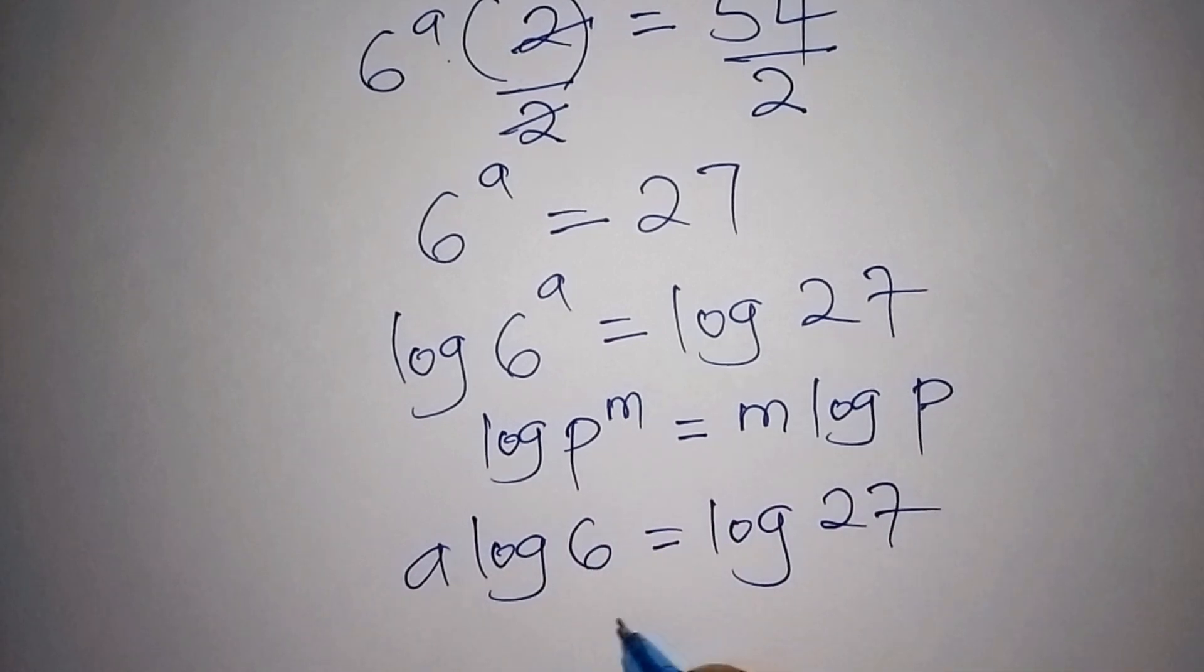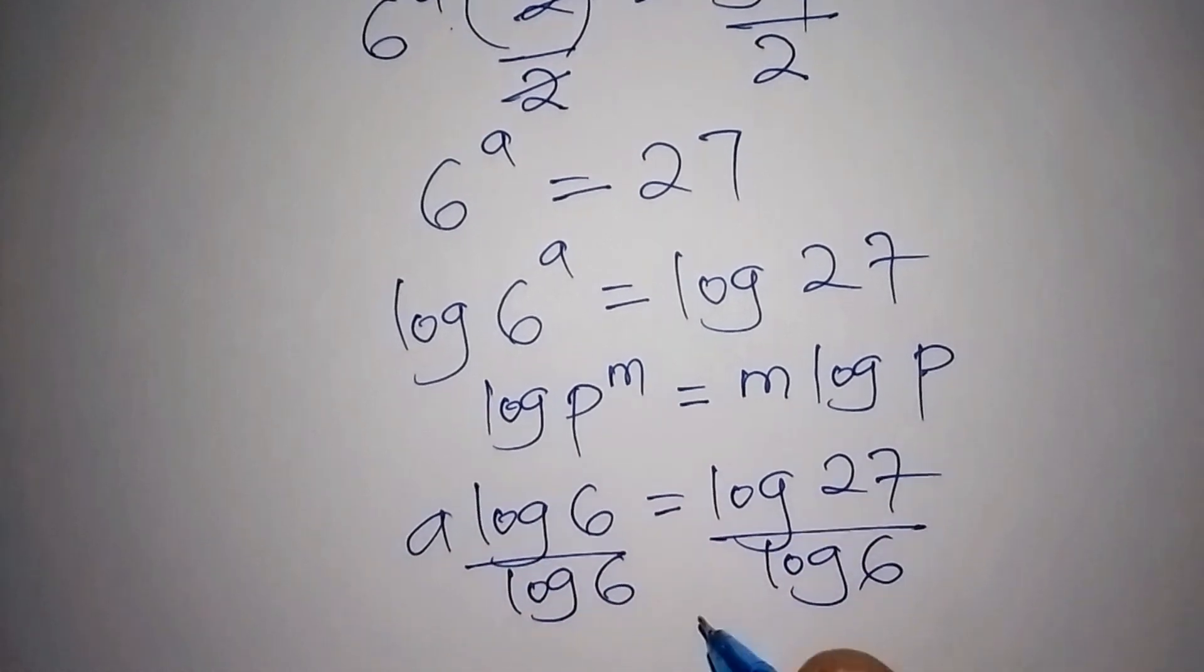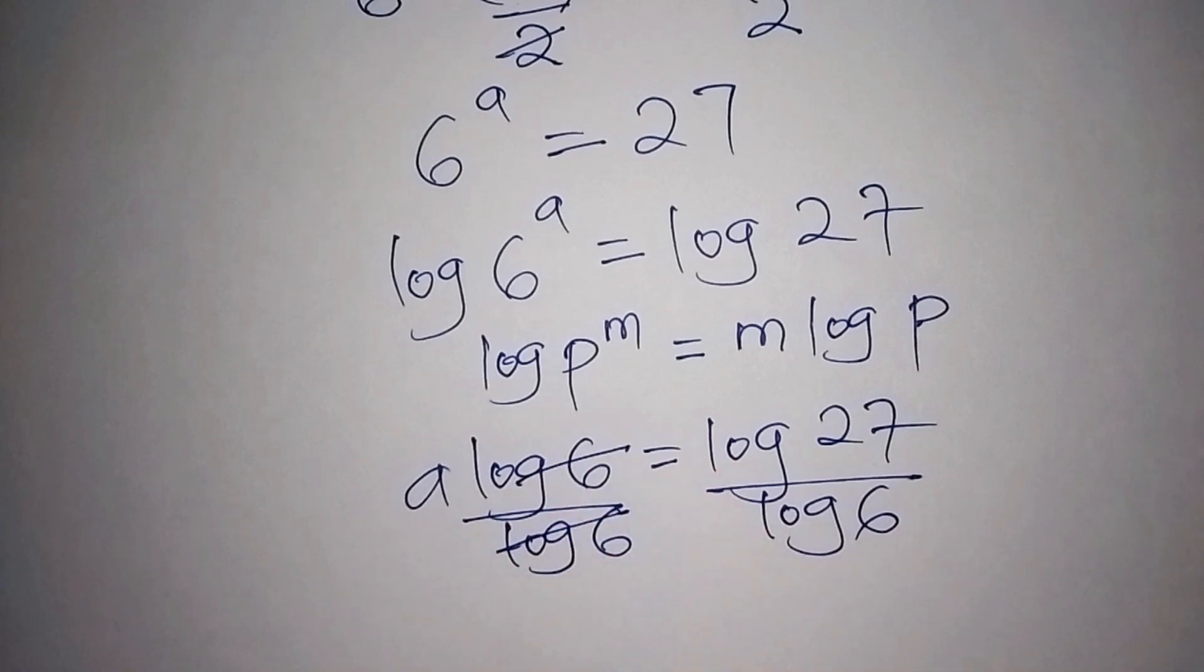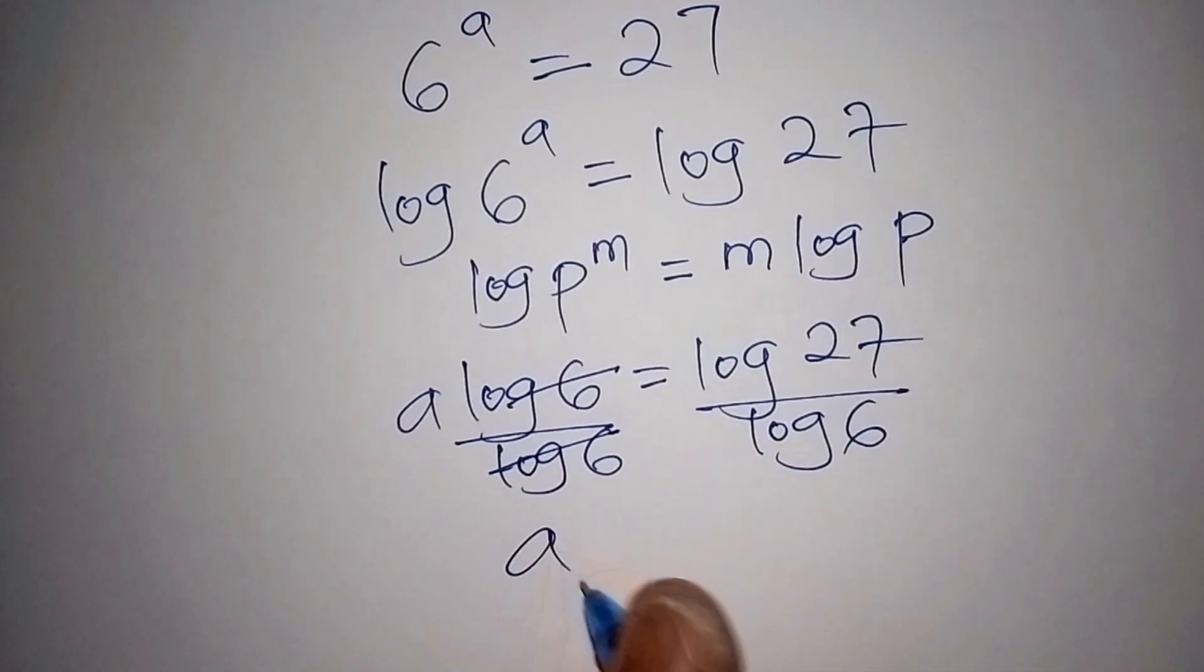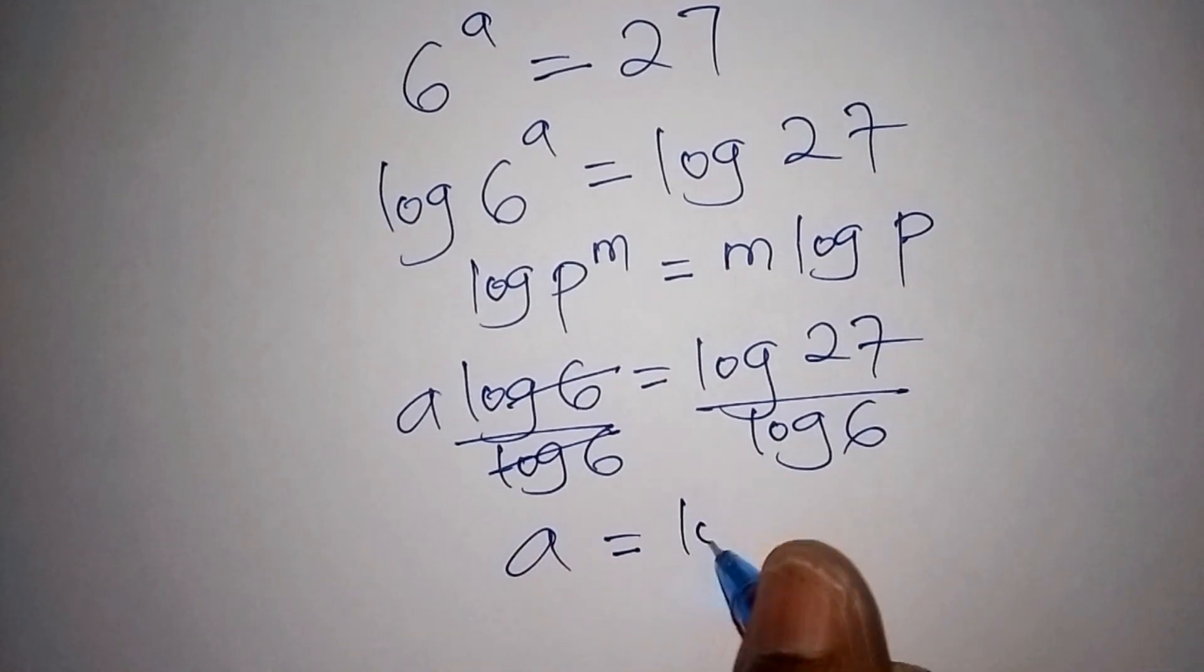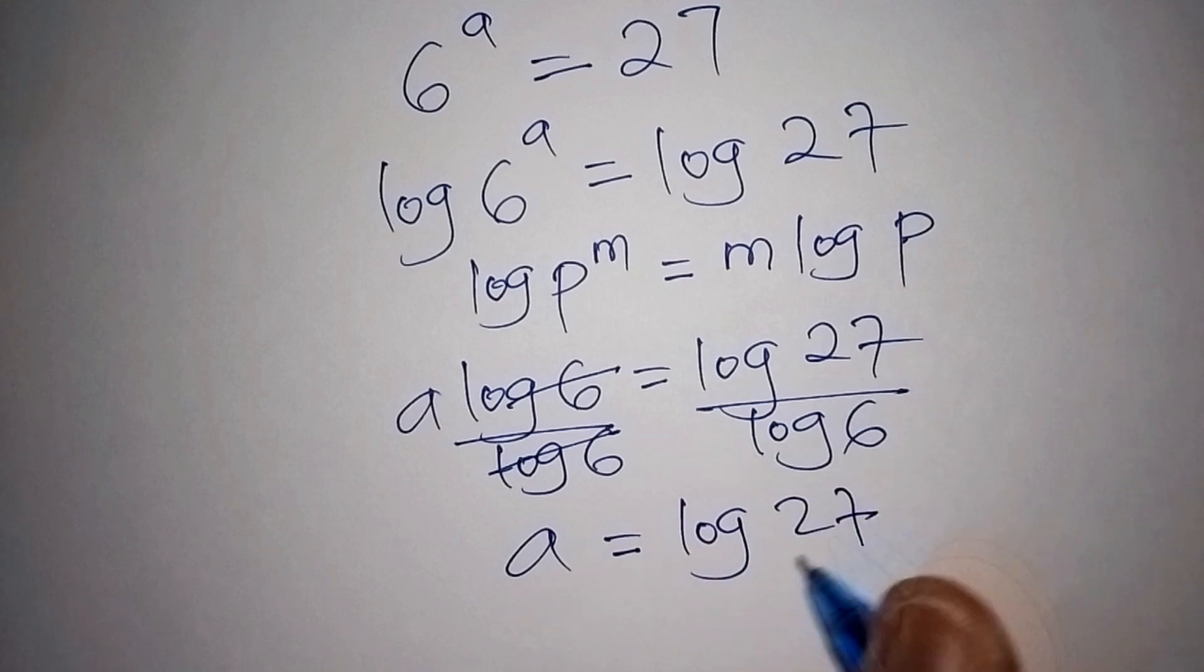So finally we shall divide both sides by log 6. So log 6 and log 6 cancel. So now the value for a equals the log of 27 all over the log of 6.